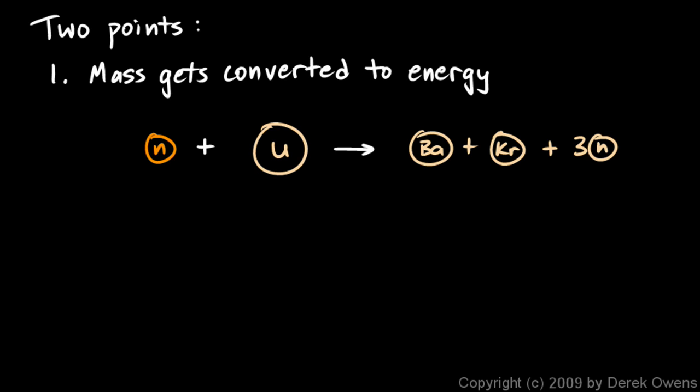Now there's two important points to note about this. Here's a simplified picture of the reaction. The neutron plus the uranium gives us the barium plus the krypton plus three neutrons. The total mass over here is a little bit less.